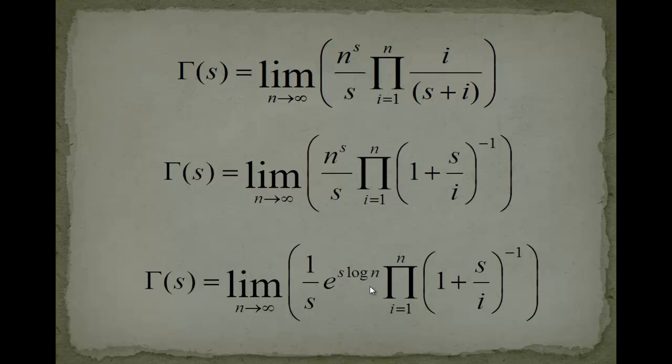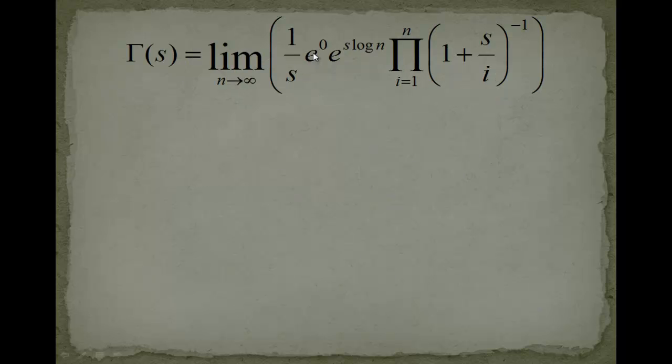Now the next step is very, very trivial. We just write here e to the 1. We just add this because this is 1. It doesn't matter if you multiply something with 1 or just leave it away. So we just multiply it with 1. You may think, wow, you are clever. Actually, this is really clever. This is not a stupid step that was done here.